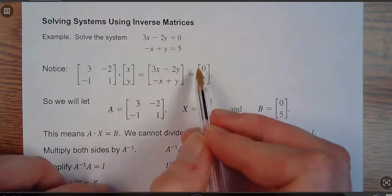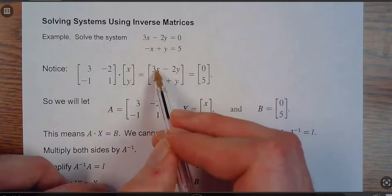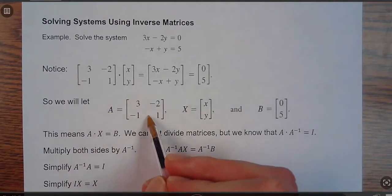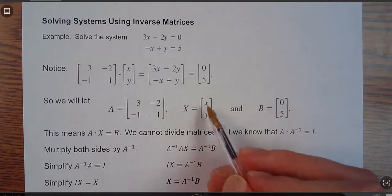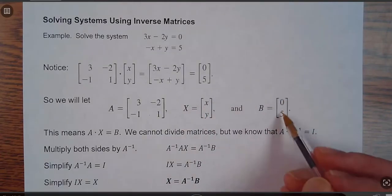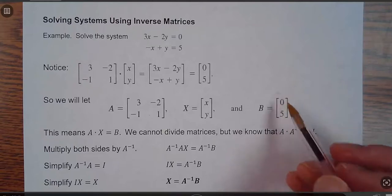And this equals this. These are equivalent matrices because 3x minus 2y equals 0. So we can split those up, and then we'll name them. A would be the coefficient matrix. We just call this X as your variable matrix. And then B is like the answers. Okay, that's the answers to the system of each line.